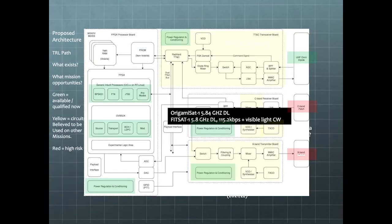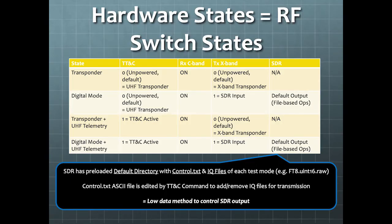Here's a very high level estimate of the riskiest parts of the design, some similar designs that can be used as resources or references. This is the hardware states, which are defined as the RF switch states. We have four modes. There's a transponder mode, digital mode, transponder plus UHF telemetry, and digital mode plus UHF telemetry. Our SCR has preloaded files so it can operate as a beacon so that people can test their stations. The idea here is to roll through all the modulation and coding combinations in DVB-S2, S2X, so that the station capability can be measured.